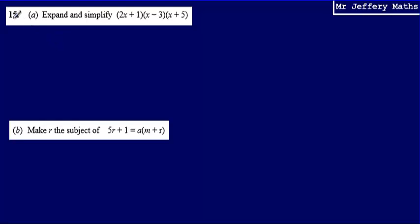This is question 15. In part a, we're asked to expand and simplify (2x + 1)(x - 3)(x + 5). So what we're really being asked to do here is we're being asked to multiply three quantities.